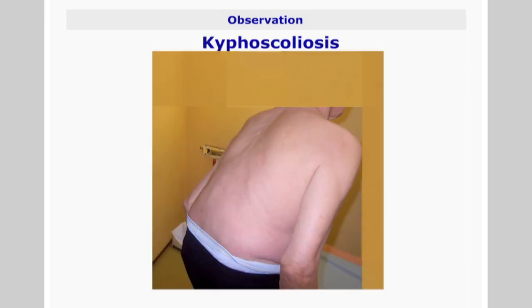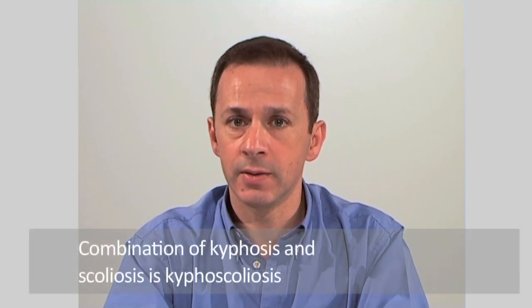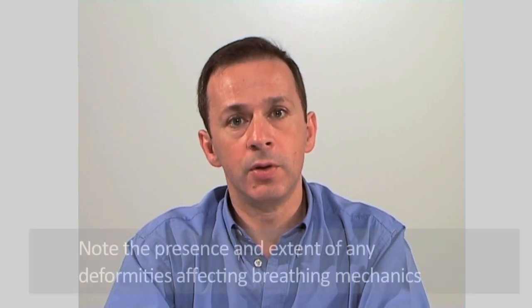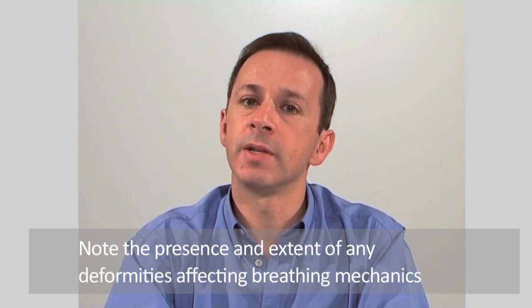Deformities of the rib cage are often associated with spinal deformities such as kyphosis or scoliosis. Kyphosis, an anterior curvature of the spine, has a variety of causes including trauma, developmental problems like Scheuermann's disease, and degenerative diseases such as osteoporosis. Scoliosis is the lateral curvature of the spine, and when significant it takes the form of kyphoscoliosis. This deformity may be idiopathic, congenital, or develop as a result of pathological and degenerative processes. If you identify such deformities, know their extent and how they may compromise breathing mechanics.